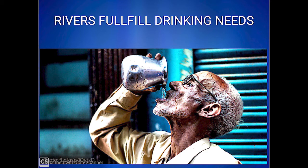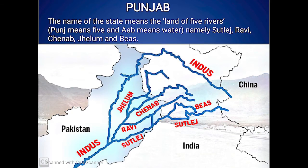While talking about the importance of rivers, how can we forget about Punjab — the most prosperous state of the northern plains? The name Punjab means a land of five rivers. Punjab is derived from the Persian words Panj and Ab. Panj means five, while Ab means water. The five rivers of Punjab are Ravi, Beas, Jhelum, Chenab, and Sutlej.